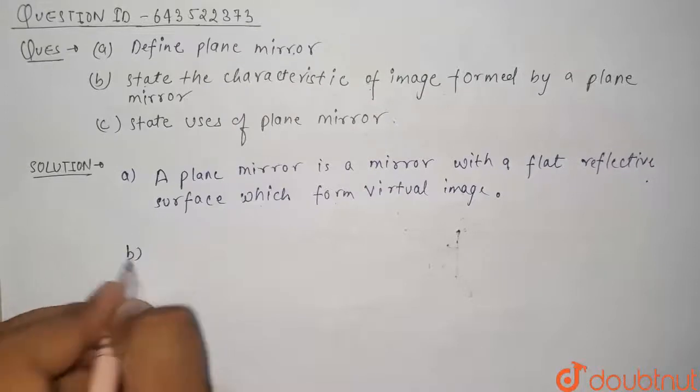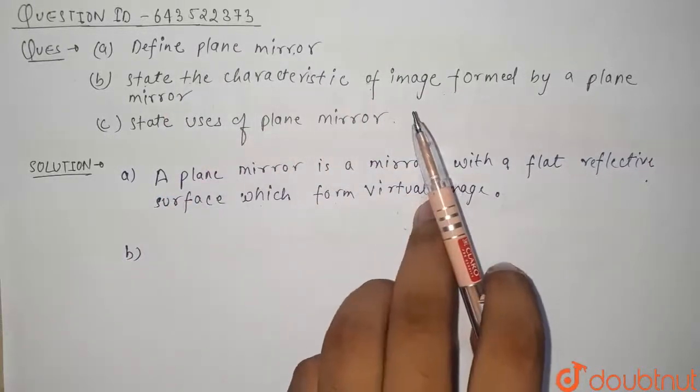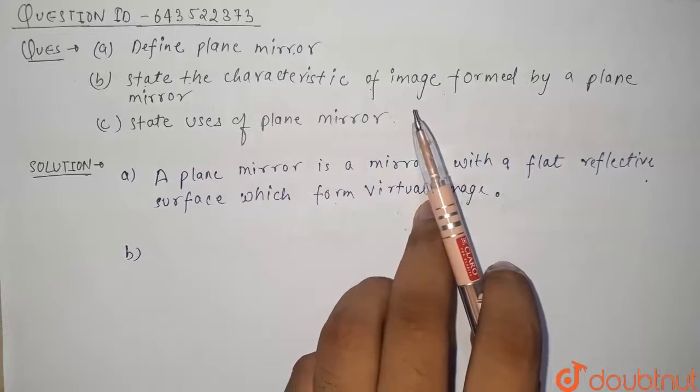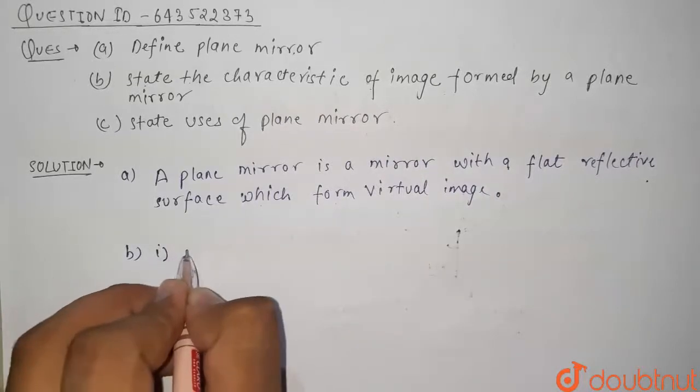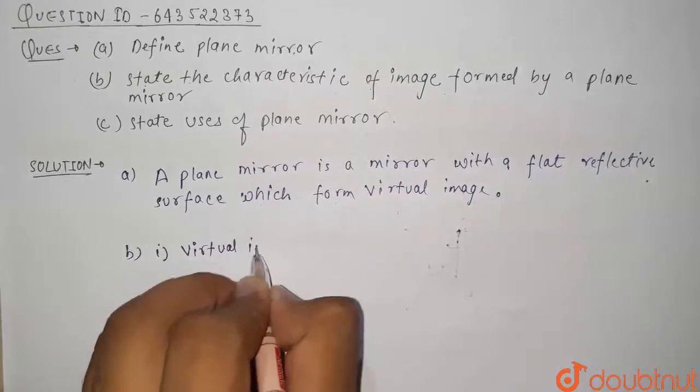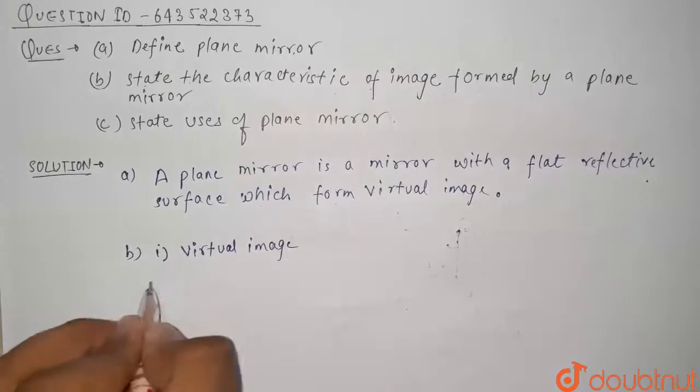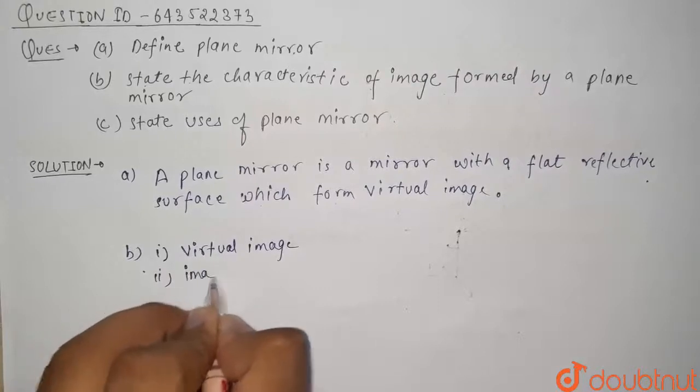Now come to part B, it states the characteristic of image formed by a plane mirror. The characteristics of images formed by plane mirror are: first, the image formed by plane mirror is virtual. Second, the image is erect and of same size as the object.